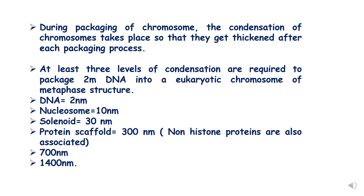The DNA which is unpackaged or not associated with anything has a diameter of 2 nanometers. During the first level of packaging, called the nucleosome model, the 2 nm DNA diameter condenses to 10 nanometers. In the second level of packaging, called the solenoid model, it condenses to 30 nanometers. Then in the third level it condenses to 300 nanometers, and then attains 700 nanometer and 1400 nanometer structures.